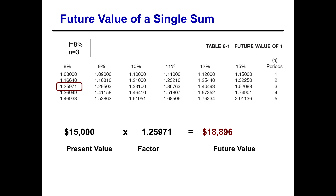You take that factor, which incorporates everything — compounding, the percentage, the periods — and multiply it times the lump sum amount. That gives you a future value of $18,896. Meaning if we invest $15,000 today at 8% interest over three years, we will have $18,896 in that account — so it's earned $3,896 in interest.